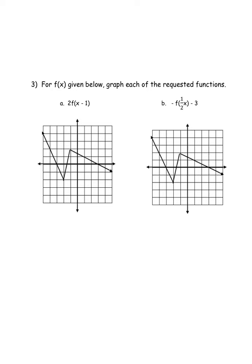For this one, I want to document what I'm going to be doing first with each of my graphs. Working with PEMDAS, start inside the parentheses. The first thing I see is an x minus 1 — that means I'm going to be going to the right one. Then the 2 out in front, because it's applied to the f of x, that means it's applied to the y value. That is going to be a vertical stretch by a factor of 2. So those are the two things I'm going to do here.